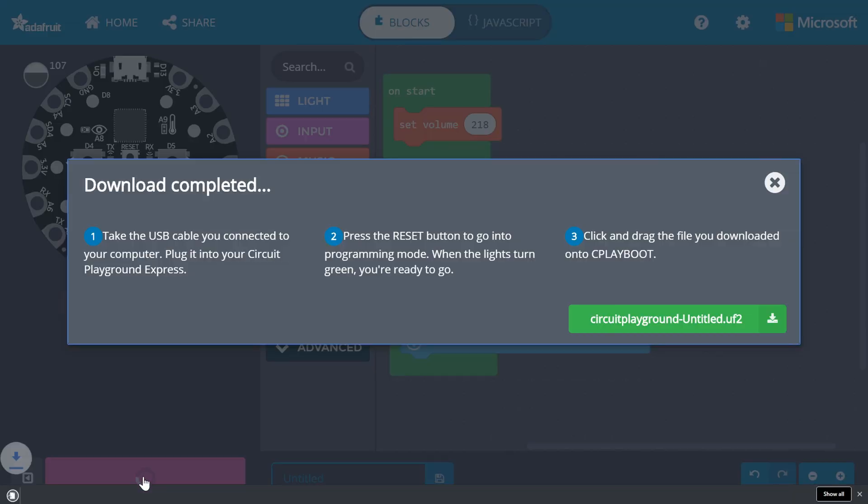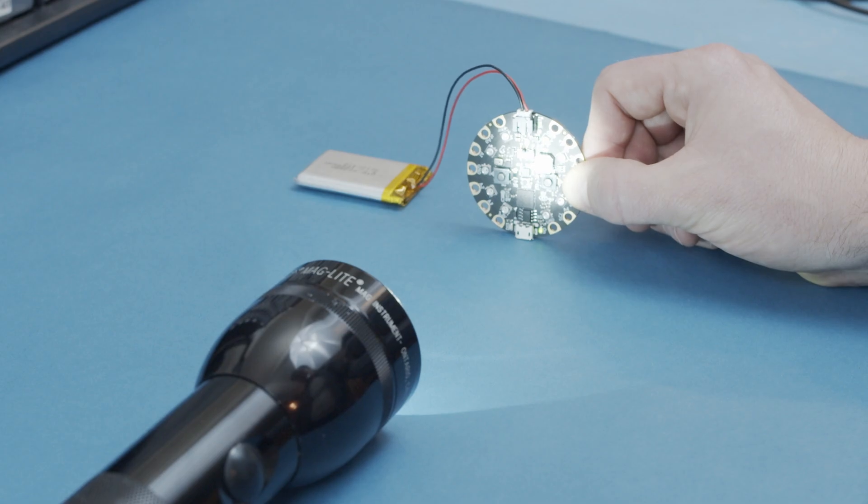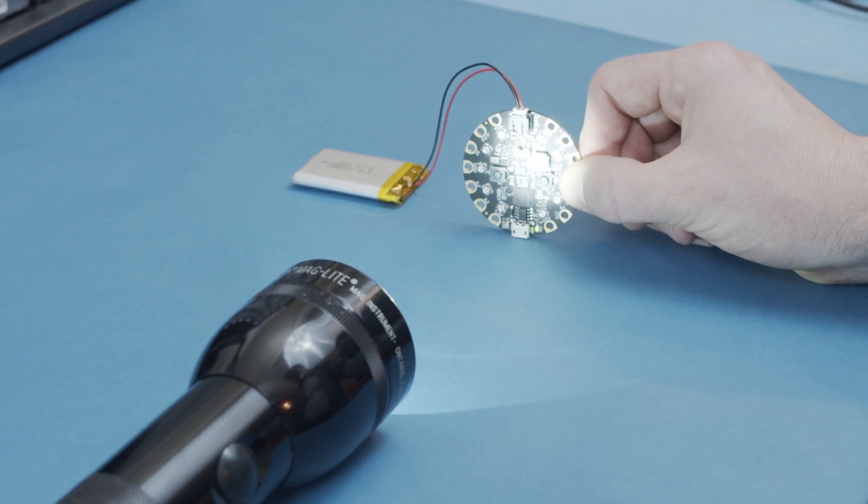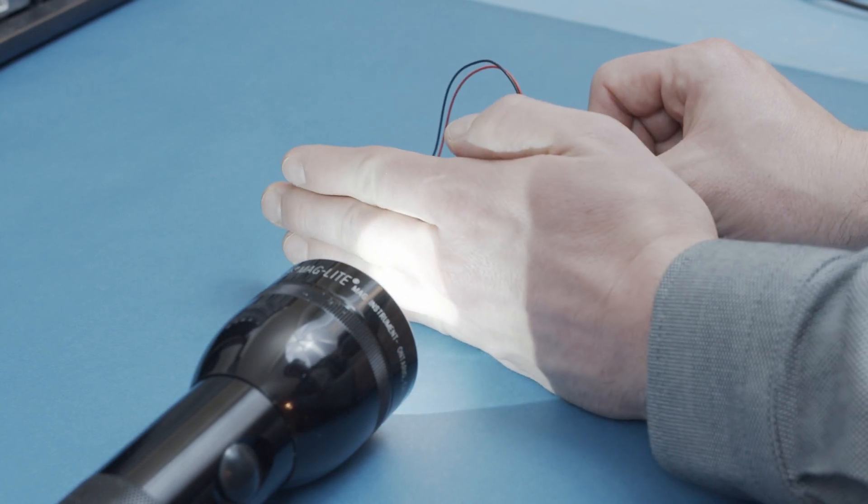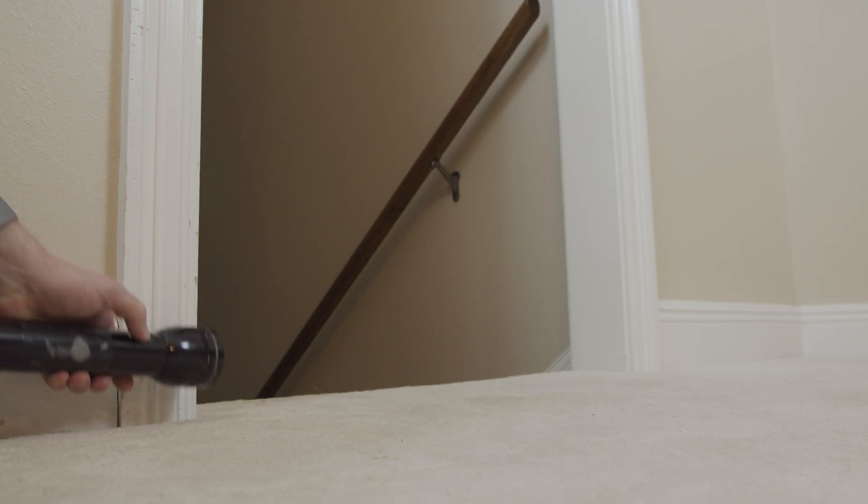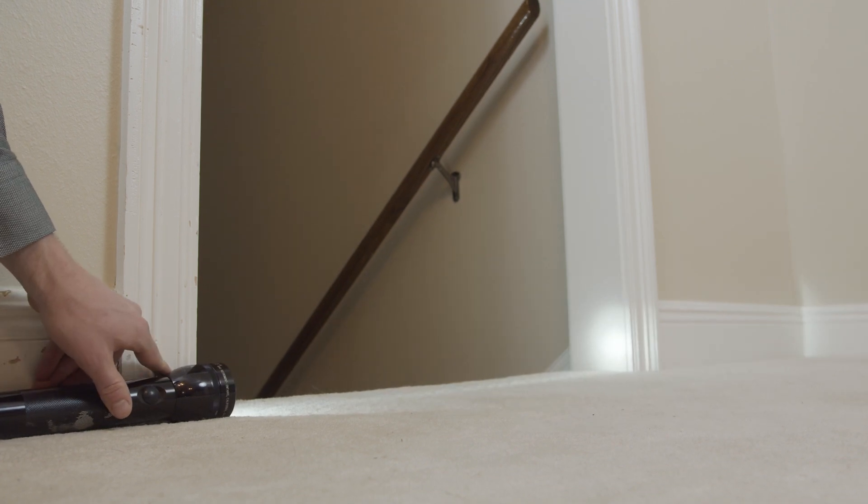Download the code and copy it to your Circuit Playground Express. When we shine our flashlight onto the light sensor, the Circuit Playground Express will sit there quietly. If we break the beam with something, the alarm will go off. You now have a basic tripwire system.